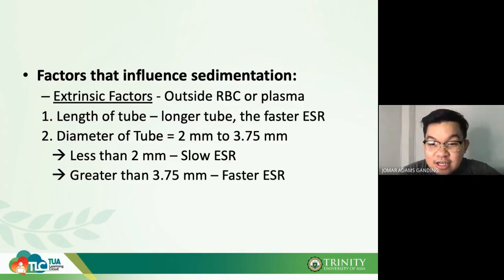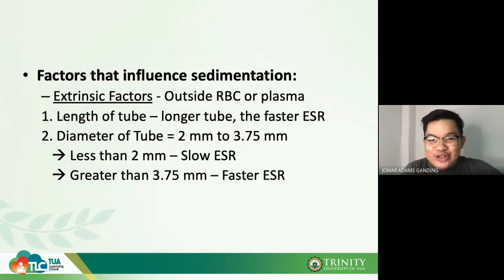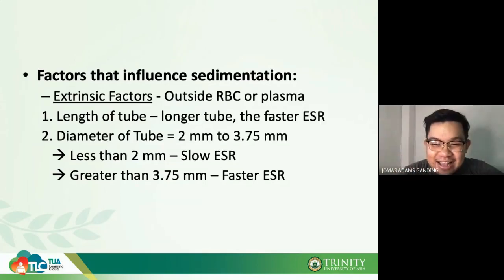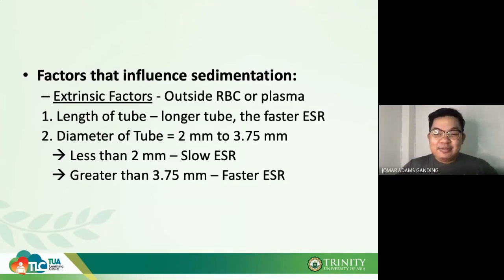Quick review: the distance of the tourniquet from the puncture site should be 3 to 4 inches. The drop of blood from the label in your peripheral blood smear should be 1 cm. The angle of needle insertion during phlebotomy is 15 to 30 degrees; for a peripheral blood smear, the angle is 30 to 45 degrees.